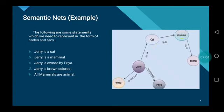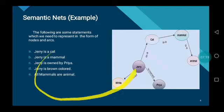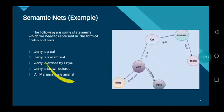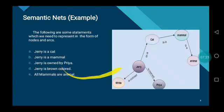Jerry is a mammal. Jerry is on prayer. Jerry is brown in color. All mammals are animals. This form of representation is argued to be closer to the way humans structure knowledge.